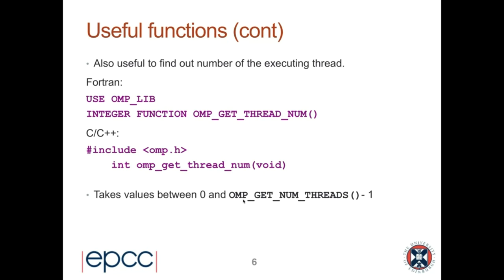A gotcha for Fortran programmers: if you ever use the thread ID to index an array, remember that thread numbers start at zero whereas array indices start at one by default. So there is a potential pitfall there for Fortran programmers.